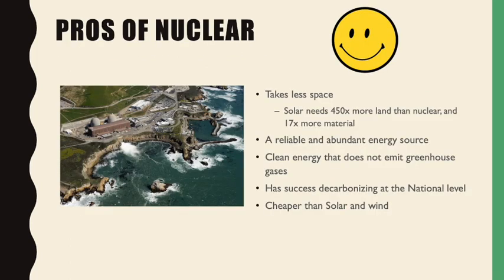A major pro of nuclear energy is that it takes less space. Solar needs about 450 times more land than nuclear, and 17 times more material to produce the same amount of energy. The Diablo Canyon nuclear power plant in California, shown here, takes up about four football fields and provides energy to 3 million Californians — compared to wind turbines spread across the entire country providing energy to 3.4 million Canadians.